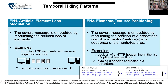For the second non-temporal pattern, element features positioning, the covert message would be embedded by modulating the position of a predefined set of elements or features in a sequence. The idea is pretty simple — for example, we could modulate the order in which HTTP header lines appear, such as whether user-agent or accept-language comes first, or we could place a specific character in some paragraph.